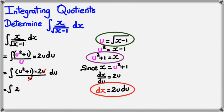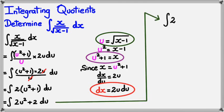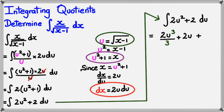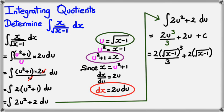Expanding, we get 2u² + 2 du. From this point it's just basic integration, giving 2u³ divided by 3 plus 2u, plus c. Now we want this in terms of x, so we substitute u back as √(x minus 1). The final answer is 2 times (√(x minus 1))³ divided by 3, plus 2 times √(x minus 1), plus c.